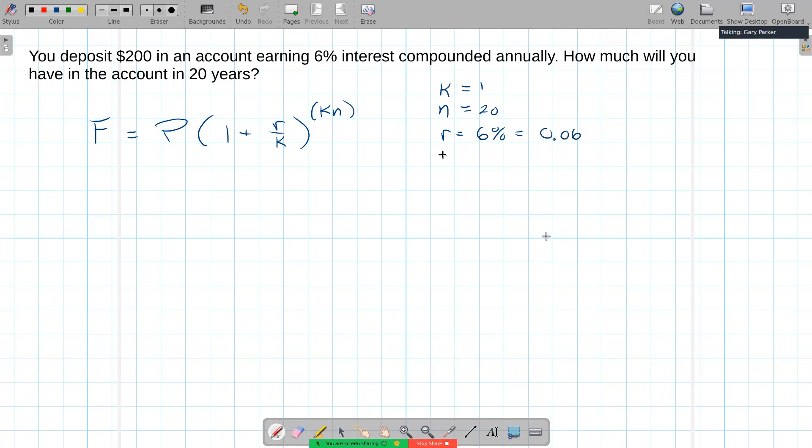The P is our principal or present value, and that's our $200. That's what we're starting with. We want to know what we end up with. So we're going to calculate F, our future value. And we can do that either using this formula in a regular calculator or a spreadsheet formula. So let's take a look at each of those.